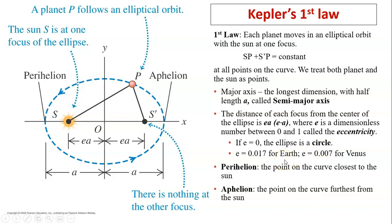Earth's path is very close to a circle. E equals 0.017. And Venus's path is even more close to a circle because E for Venus is 0.007. The two points are important. One is perihelion, that's the point very close to the sun. The other one is aphelion, that's the point on the curve furthest from the sun.